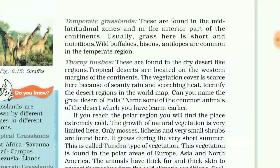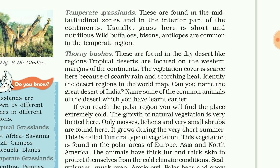Thorny shrubs and scrubs are found in the dry desert-like regions. Tropical deserts are located on the western margin of the continents. The vegetation cover is very scarce here because of scanty rain and scorching heat. You can identify desert regions on the world map, such as the great desert of India.